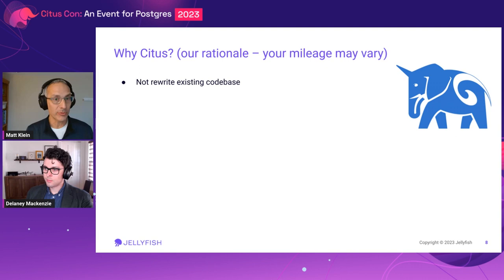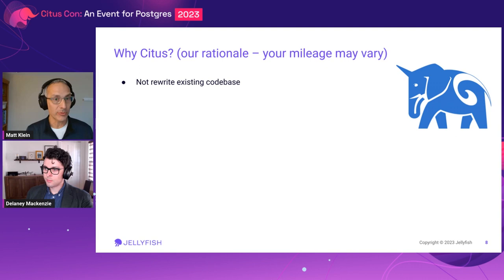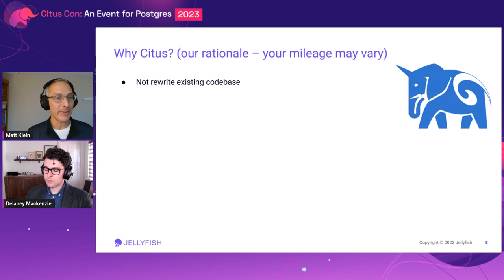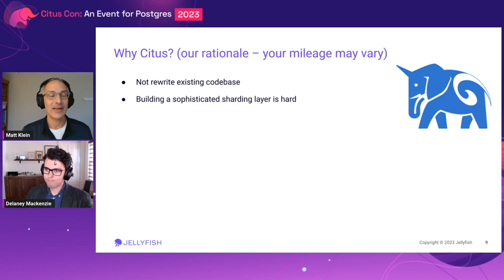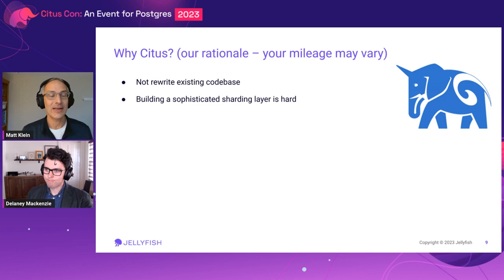So why did we at Jellyfish choose to move forward with Citus as a sharding solution? Firstly, we didn't want to undertake a big rewrite of our code base. We have a pretty large five-year-old code base and a complex database schema, and we're in a highly competitive startup environment where we're trying to move fast. We really wanted most of our engineering teams to be able to do other things besides worry about scaling. Secondly, writing a sophisticated sharding layer is hard — it's not a core competency of ours, nor should we try to make it one. In the words of Jeff Bezos, this wouldn't make our beer taste better to our customers.